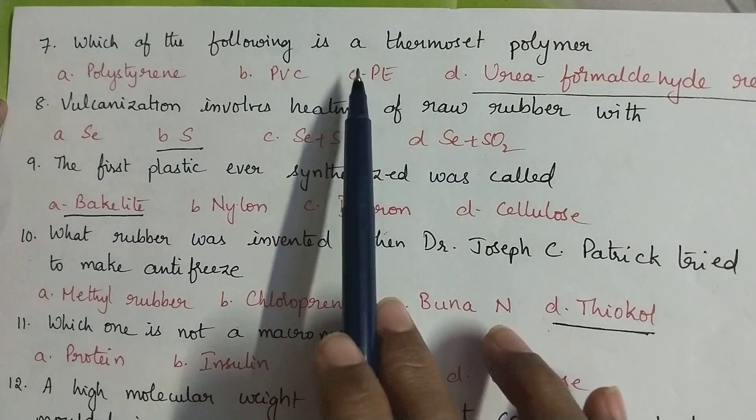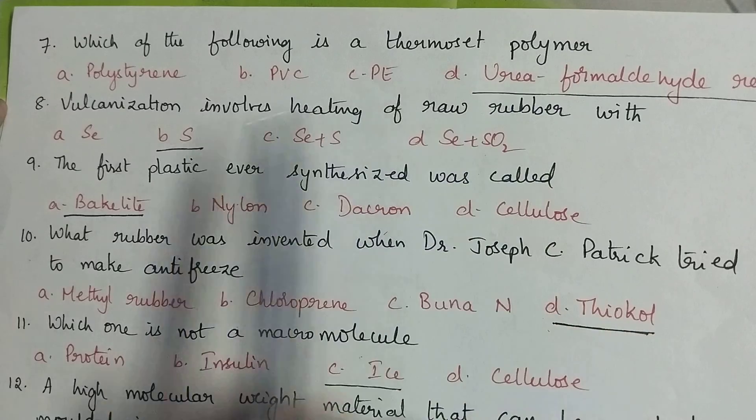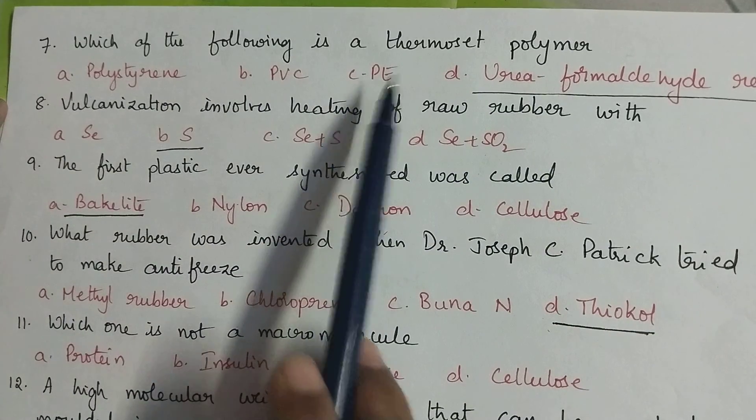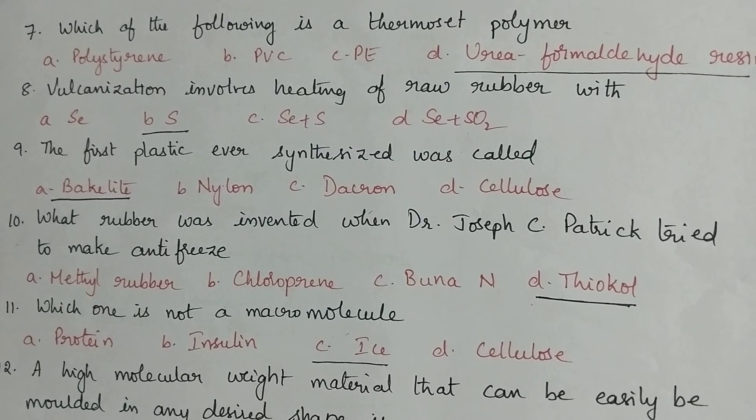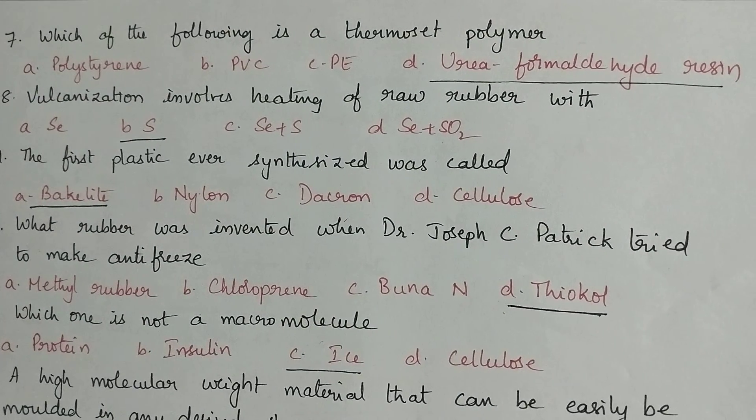Which of the following is a thermoset polymer? Polystyrene, PVC, PE comes under thermoplastics, so urea formaldehyde resin is the thermoset polymer.